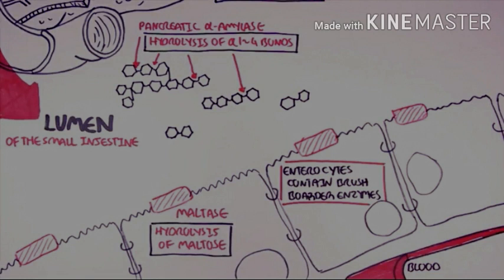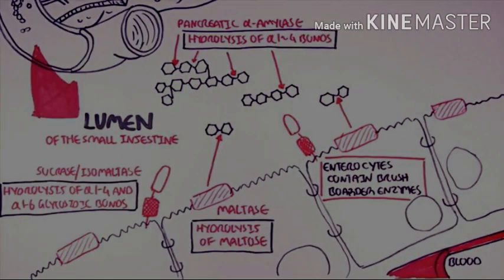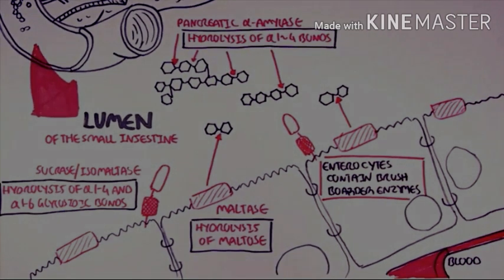The stomach will mix the contents and allow them to reach the small intestine, where most digestion takes place. Within the lumen of the small intestine, cells called enterocytes — also known as absorptive cells — are present. The pancreas, situated here, secretes alpha-amylase, which helps to further break down 1,4 glycosidic bonds and break down starch further.